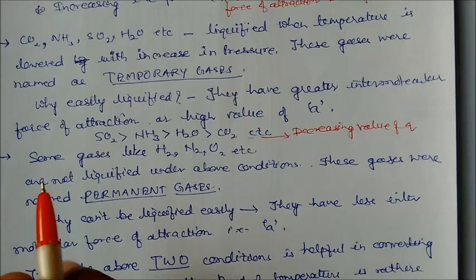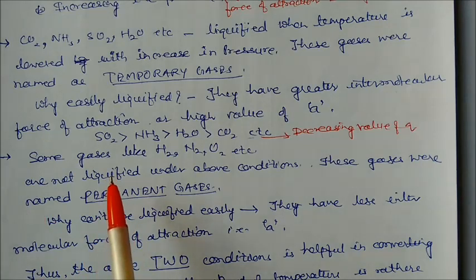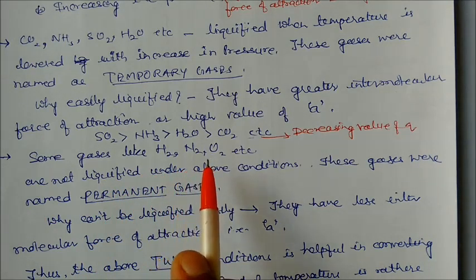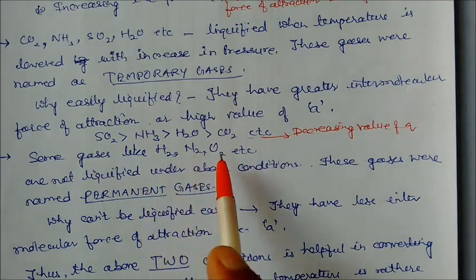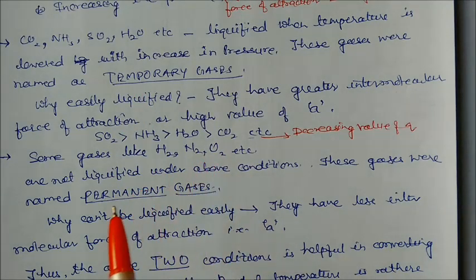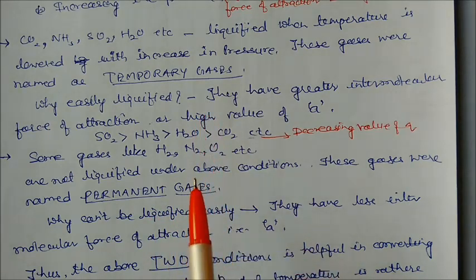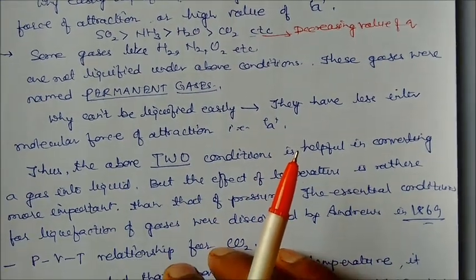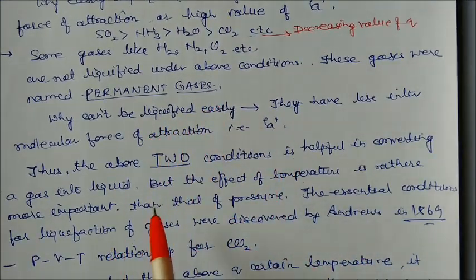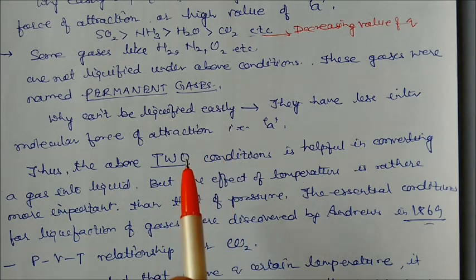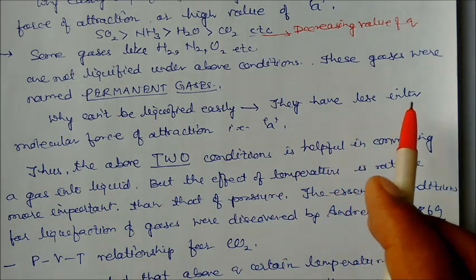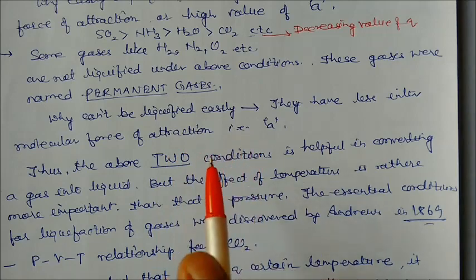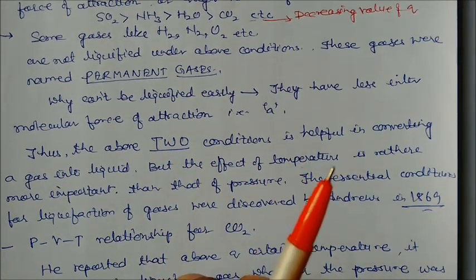This 'A' value is in decreasing order. But there are some gases like hydrogen, nitrogen, and oxygen which cannot be liquefied under the same conditions given to carbon dioxide or ammonia — they remain as permanent gases. The reason is not only that they have less intermolecular force of attraction, but there are some other reasons we are going to see today.